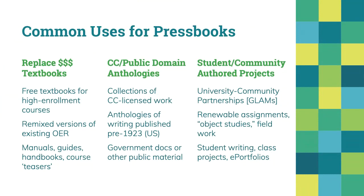We see that increasingly done by distance education or extension programs. People are also making anthologies of work that's either Creative Commons licensed or in the public domain. In fields like English, history, or political science, a lot of primary texts were published before 1923. If that's the case, there's no need necessarily to buy a Norton anthology of early American literature when you could just make one of material in the public domain. It's also a nice venue to collect and distribute government documents or other public and openly licensed material.